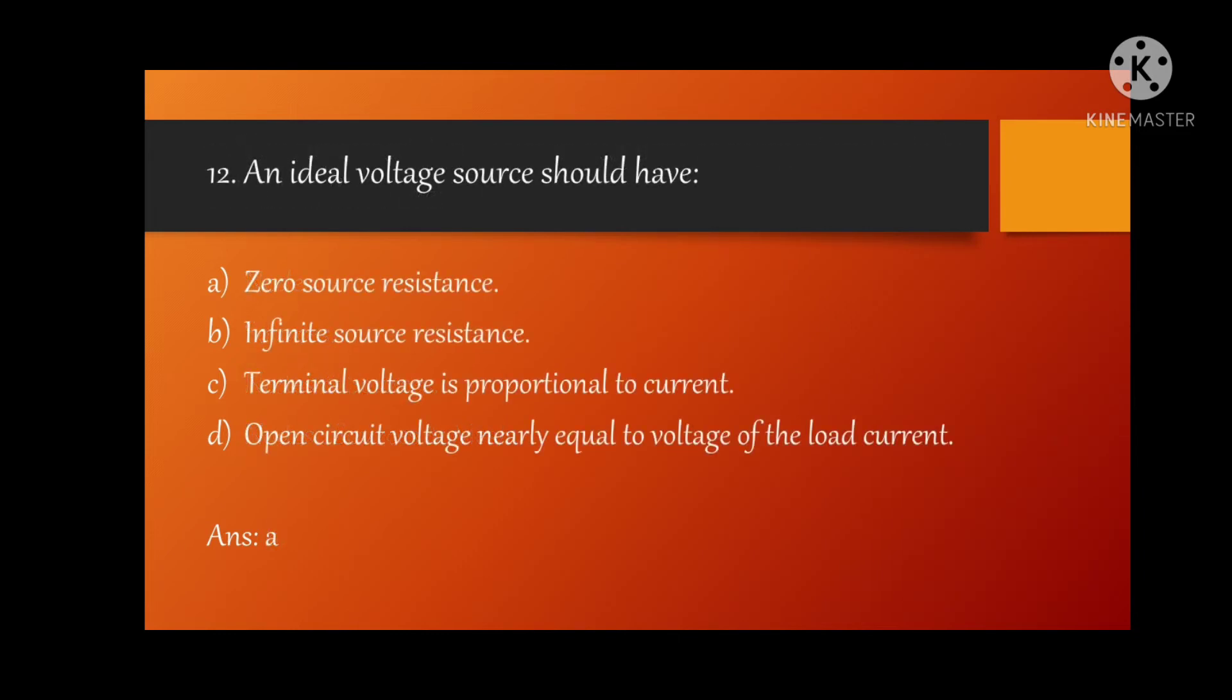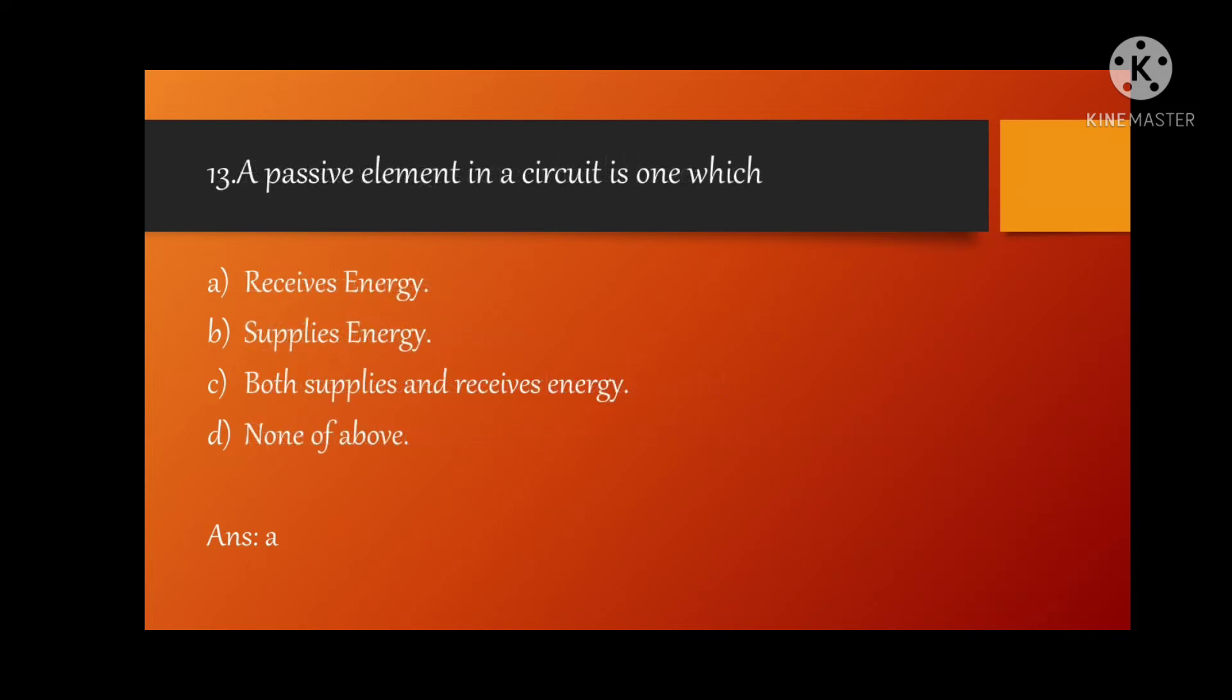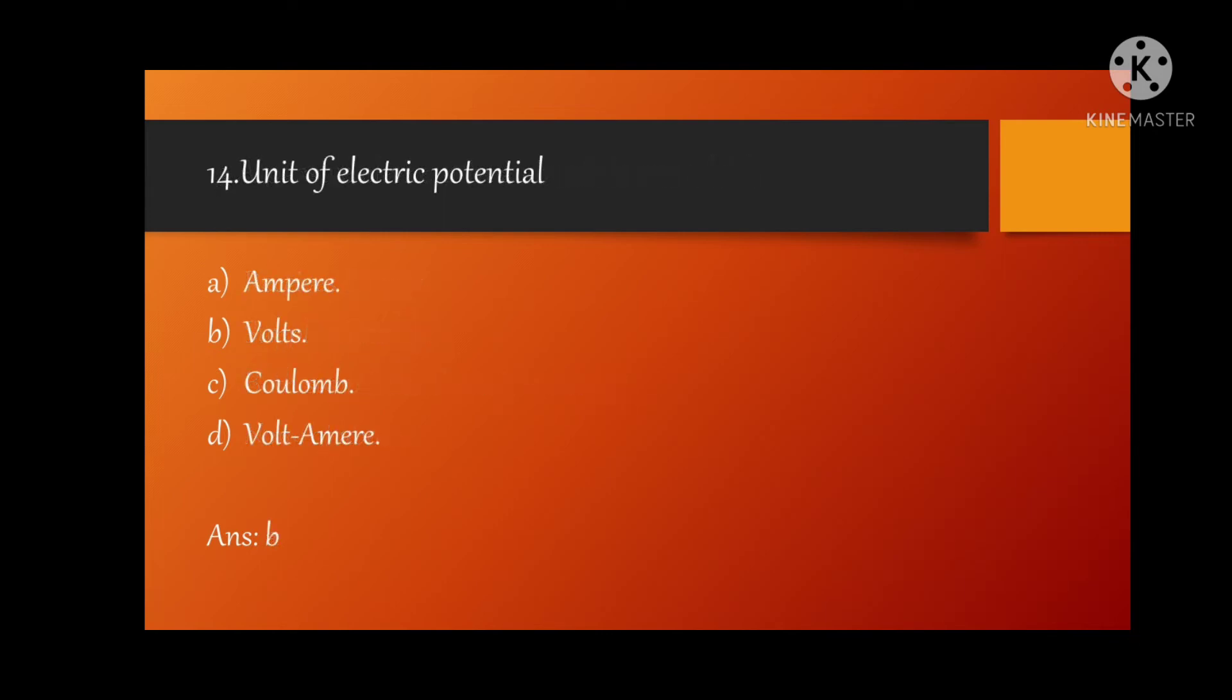MCQ 12: an ideal voltage source should have? Option A is correct, zero source resistance. MCQ 13: a passive element in a circuit is one which? Option A is correct, receives energy.